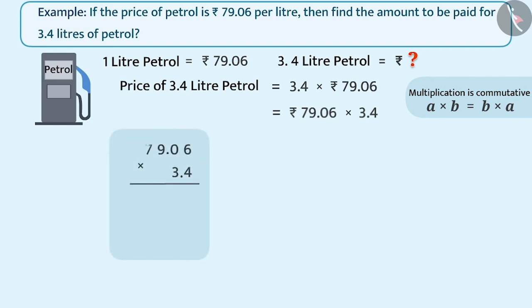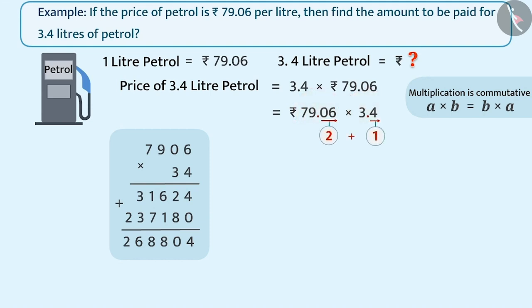To find the product, first we will ignore the decimal points of 79.06 and 3.4 and perform multiplication similar to whole numbers. That means we will find the product of 7906 and 34. The answer will be 2,68,804. Now we can see that in 79.06 and 3.4, to the right side of the decimal point, there are a total of 1 plus 2 equals 3 digits. So we will place the decimal point in the answer leaving 3 digits from the right side. This gives us the correct answer as 268.804.